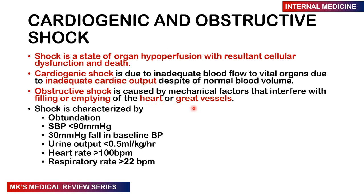Shock is characterized by the following features: a change in the level of consciousness — specifically obtundation; a systolic blood pressure less than 90 mmHg; a fall in baseline BP greater than 30 mmHg; urine output less than 0.5 mL/kg/hour; a heart rate greater than 100 beats per minute; and a respiratory rate greater than 22. There may also be specific signs and symptoms that suggest the type of shock.